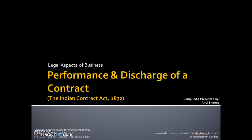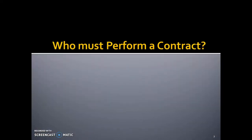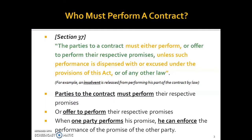First of all, we have a question: who must perform a contract? If there is a contract between two people, does the contract perform against the contract or enforce against the contract? This has been answered in Section 37 of the Indian Contract Act, which says the parties to a contract must either perform or offer to perform their respective promises, unless such performance is dispensed with or excused under the provisions of this Act or of any other law.